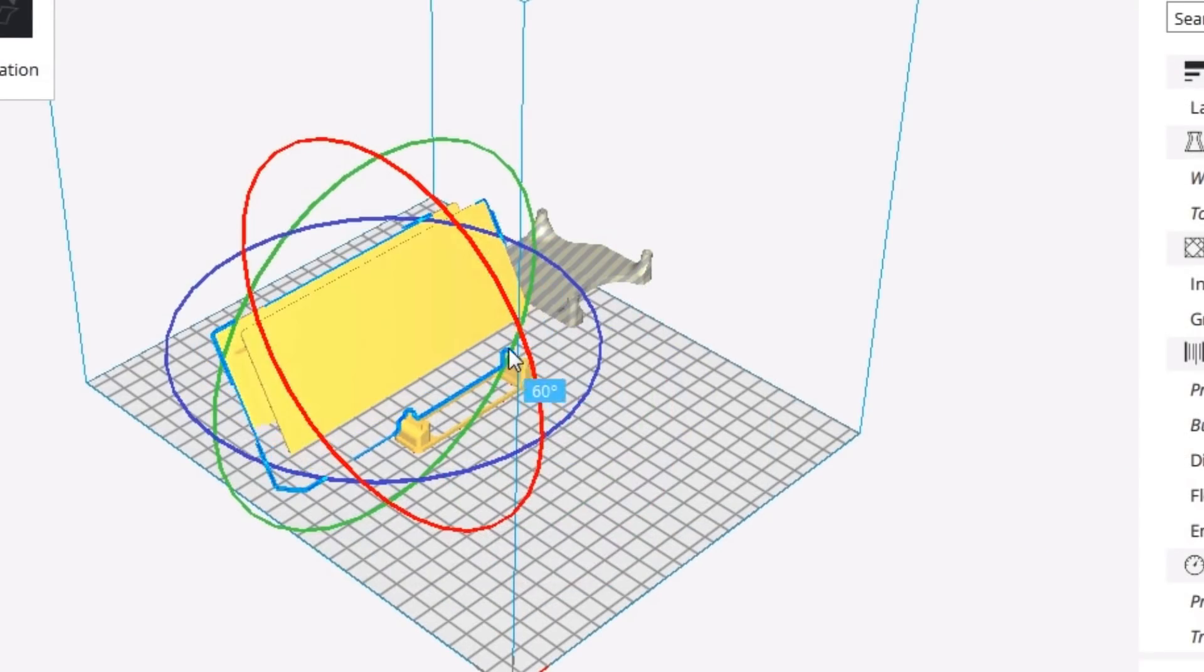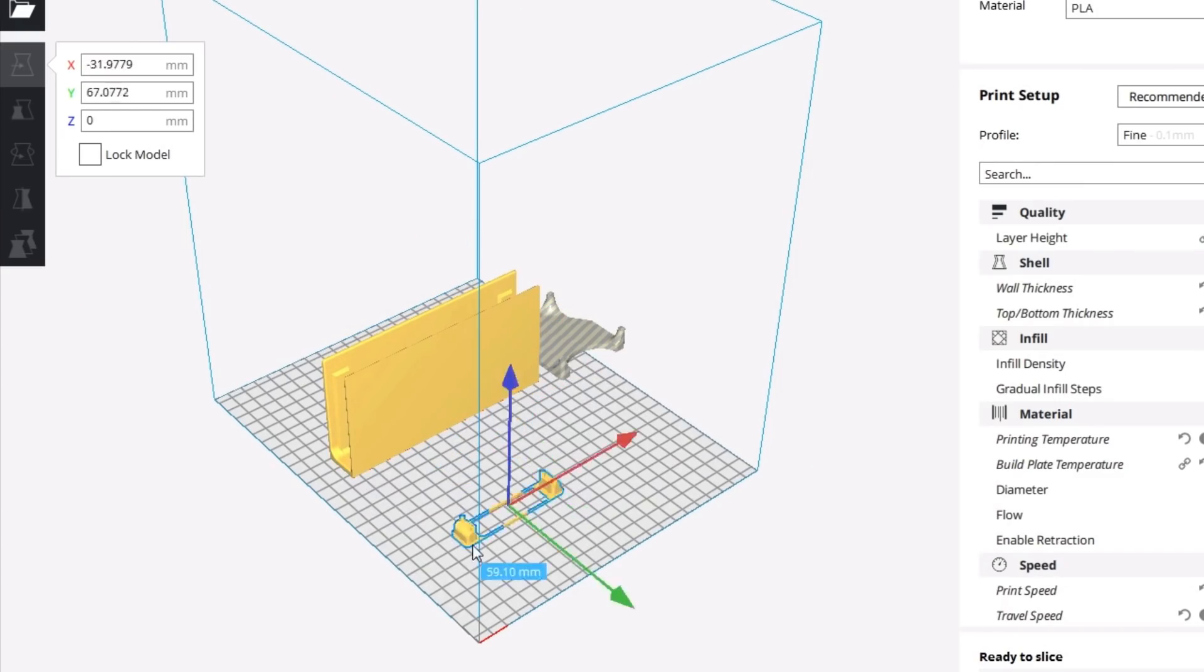The final step of designing these on the computer is to export them as an STL. This format can be read by slicer software like Cura.